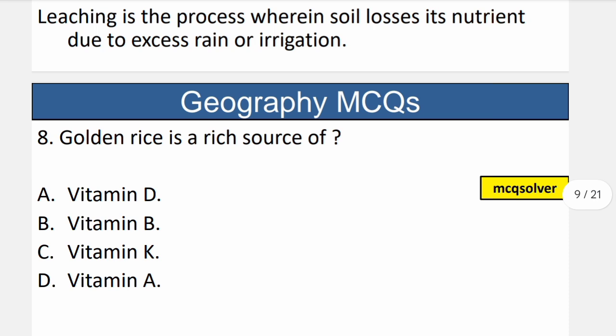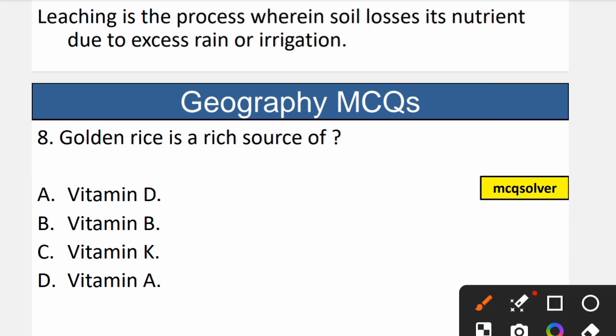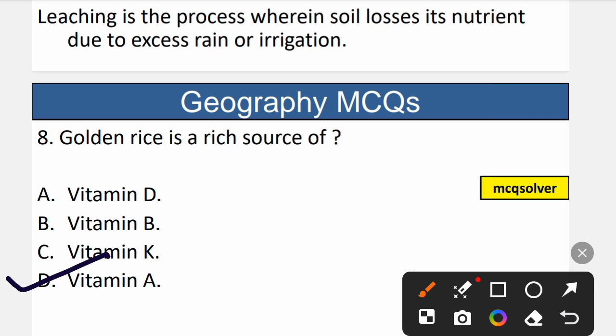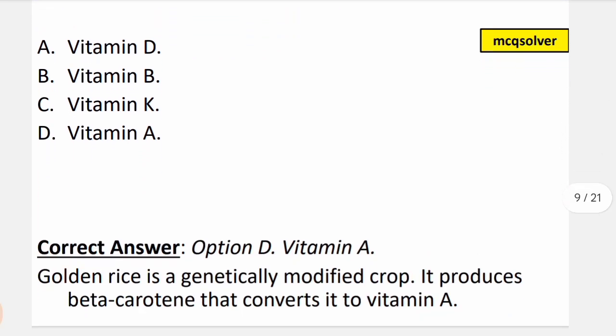Question number 8: Golden rice is a rich source of what? The correct option is D — vitamin A. Golden rice is a genetically modified crop that produces beta-carotene, which is then converted into vitamin A. So D is the correct option.